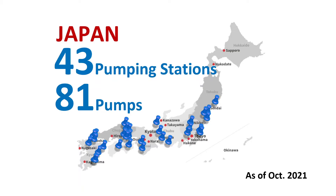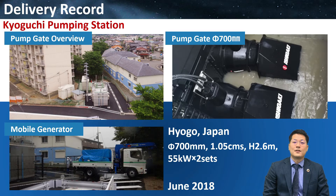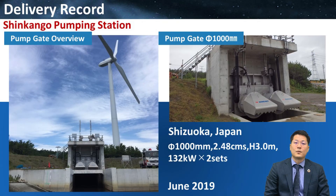Thank you for watching the video. Due to these benefits, Flat Buster has been able to receive many orders in just a few years after its announcement. In 2019, we received an order from the Philippines. Here are some of our delivery records: 700mm pumps to Hyogo, Japan; 1000mm pumps to Miyagi, Japan; and 1000mm pumps to Shizuoka, Japan.